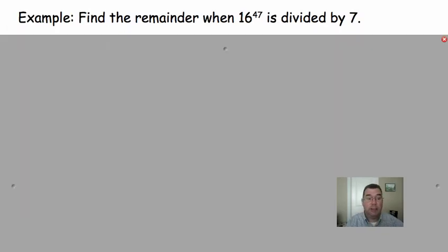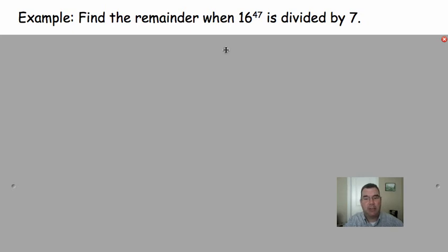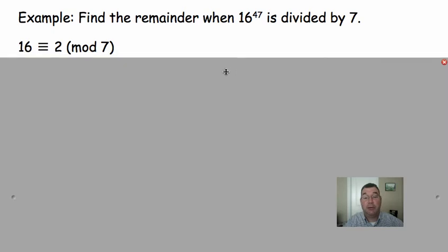So, let's move on to an example. What we're going to do is we're going to find the remainder when 16 to the 47 is divided by 7. Well, you know that if you raise 16 to the 47, you're going to get a number that's really, really huge. And your calculator might be able to handle the first several digits of that number, but after a while, it's just going to lose its accuracy. So, why do we even want to know this? I don't know, but it just gives us practice for harder problems that will come up.